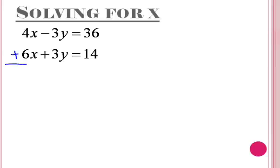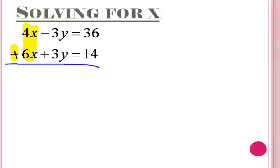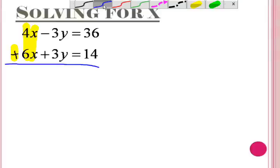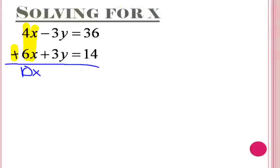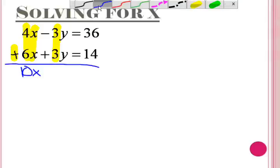First we need to add the variables like so. We add 4x plus 6x to get 10x. You don't need to worry about bringing down the sign. Then we add negative 3y plus positive 3y, which will equal 0y, or 0.